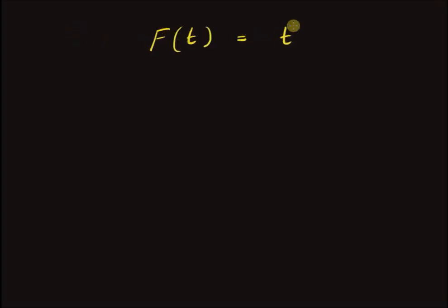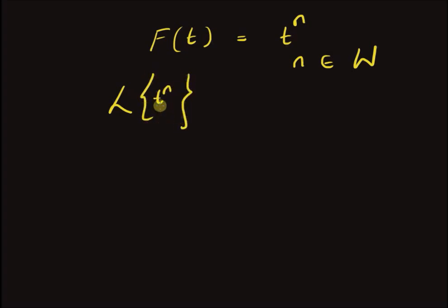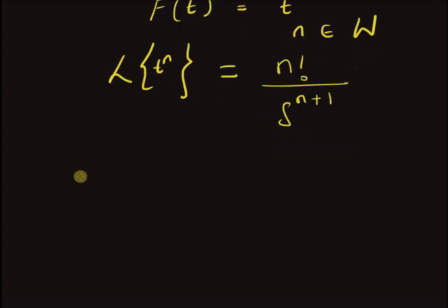Hello, welcome. In this short video, let us look at the Laplace transform of a power function. Given the function f(t) = t^n where n belongs to the set of whole numbers, the Laplace transform of t^n is given by n factorial over s^(n+1).